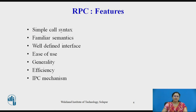Now we will see the features of RPC. It has a simple call syntax and familiar semantics because of its similarities with local procedure calls. Well-defined interfaces are present, it is easy to use, and generality is also an important feature. Its efficiency is more than the IPC mechanism, and it can be used for communication between processes on different machines as well as between different processes on the same machine.